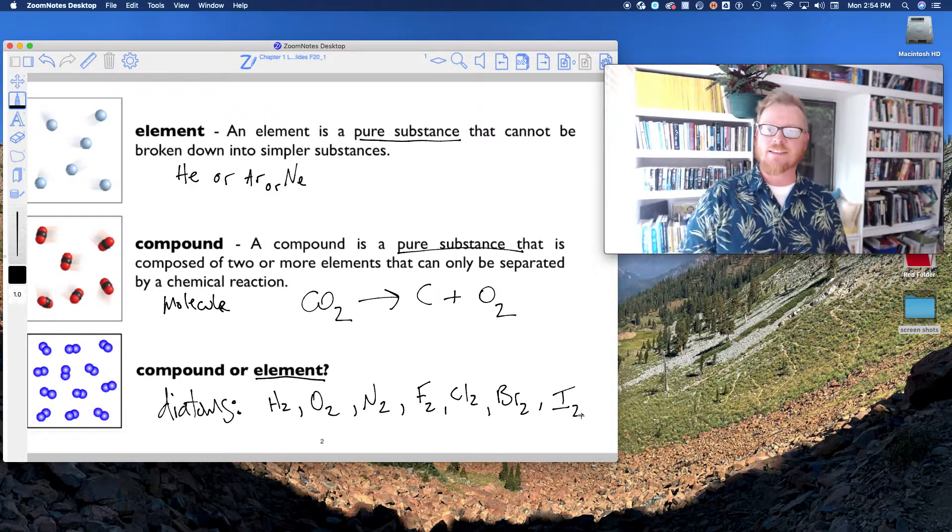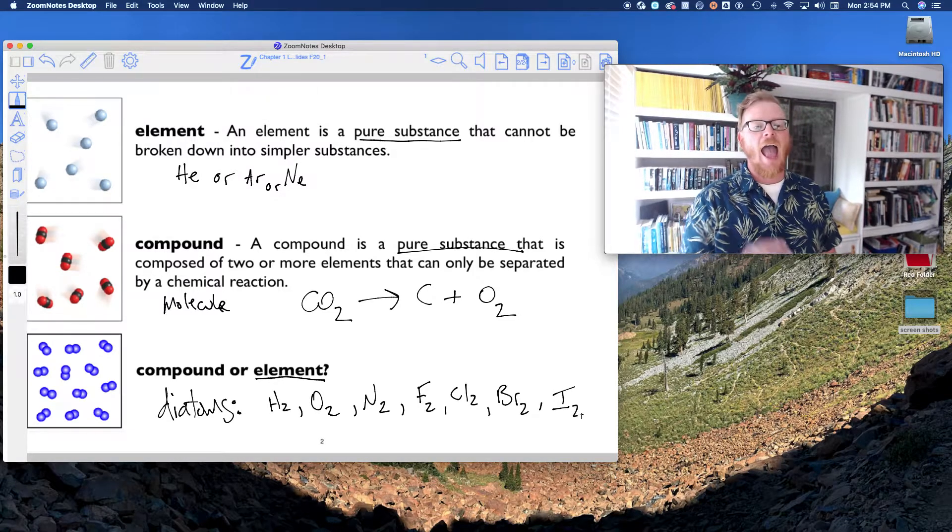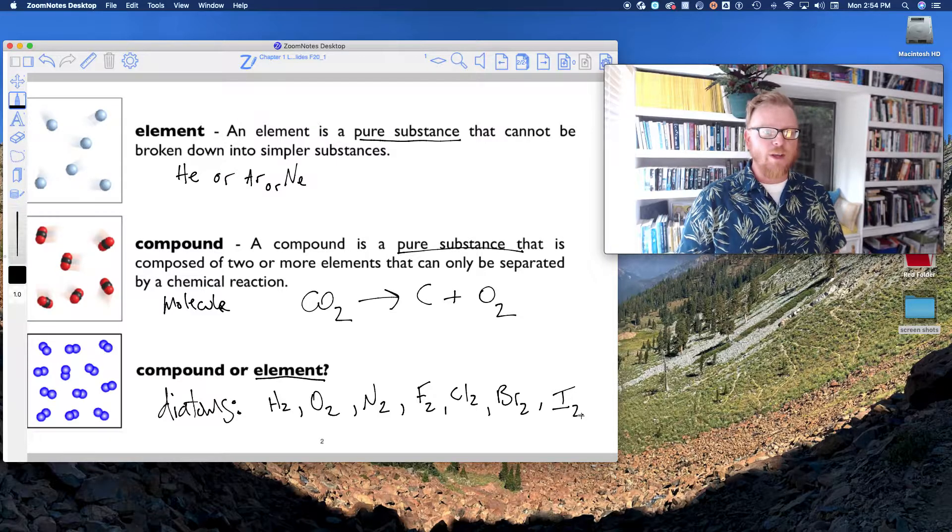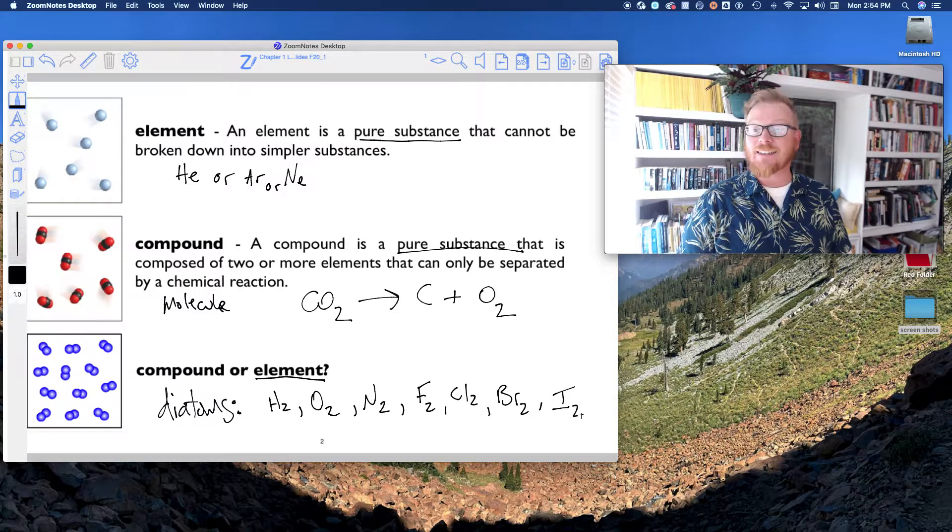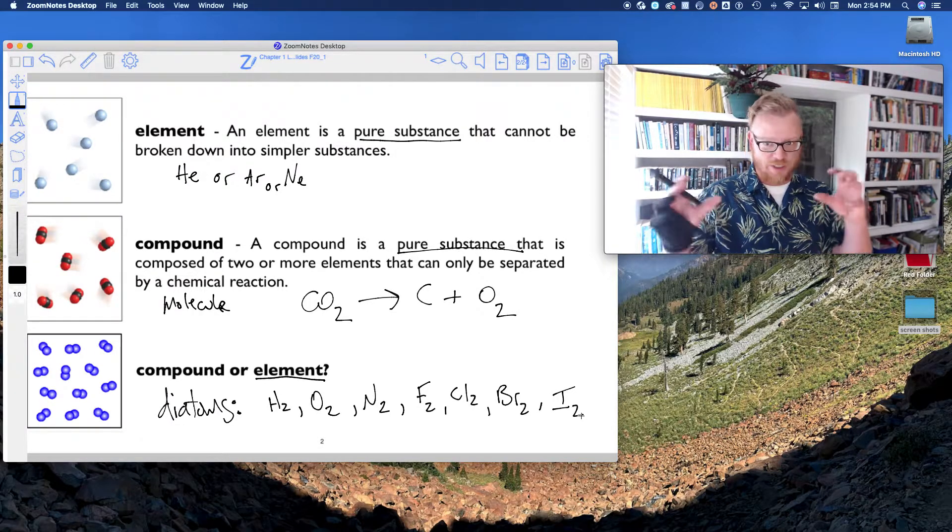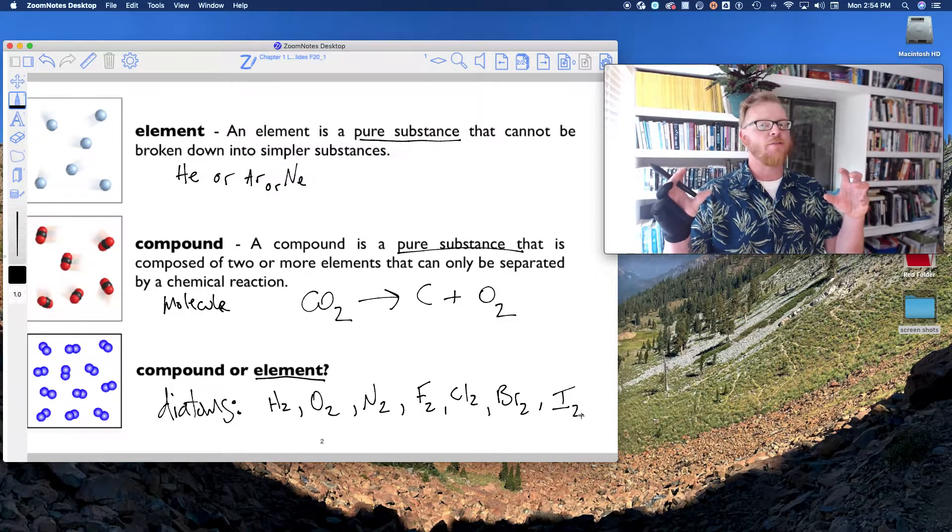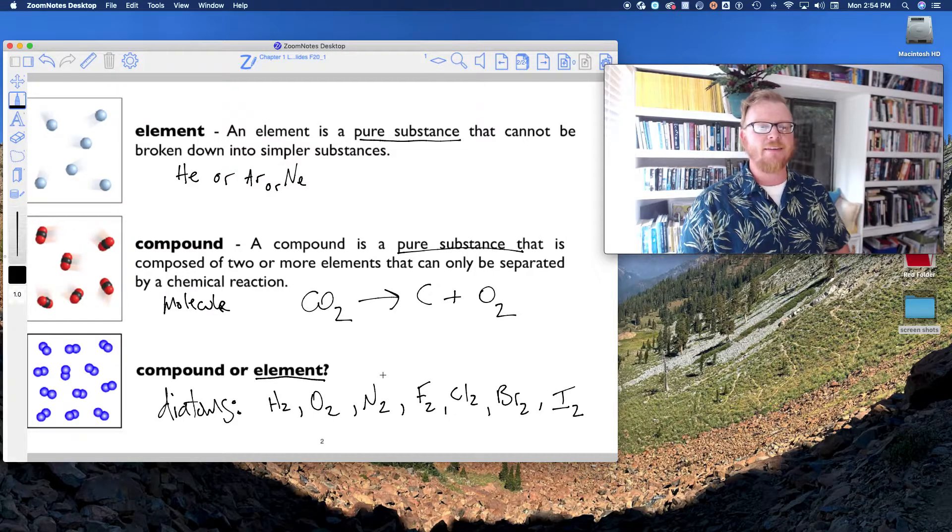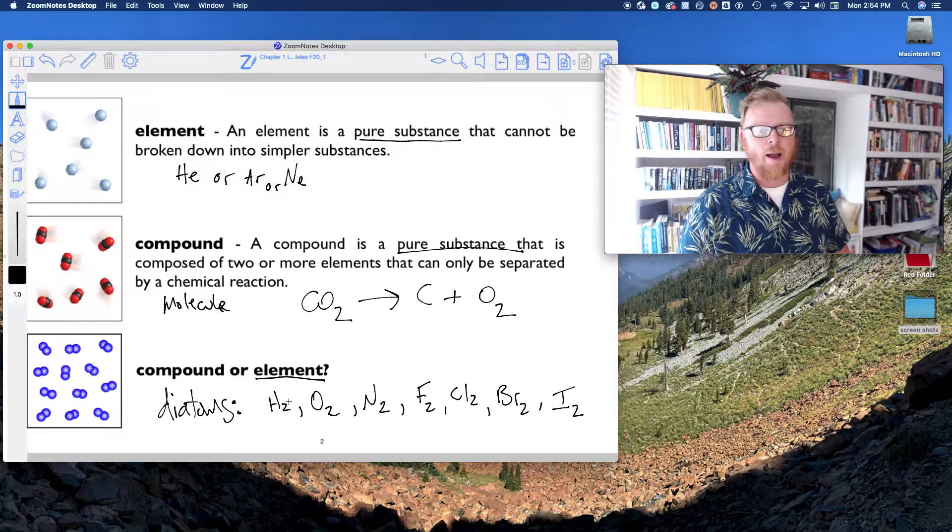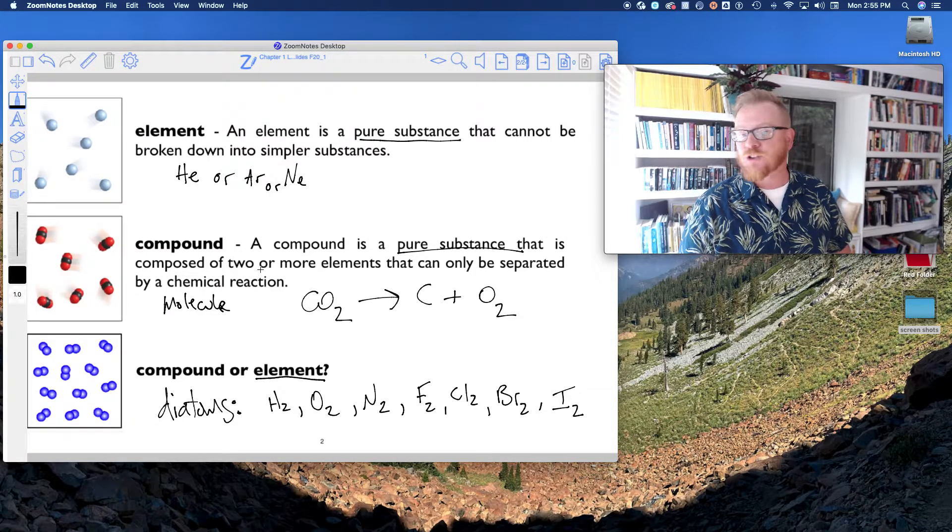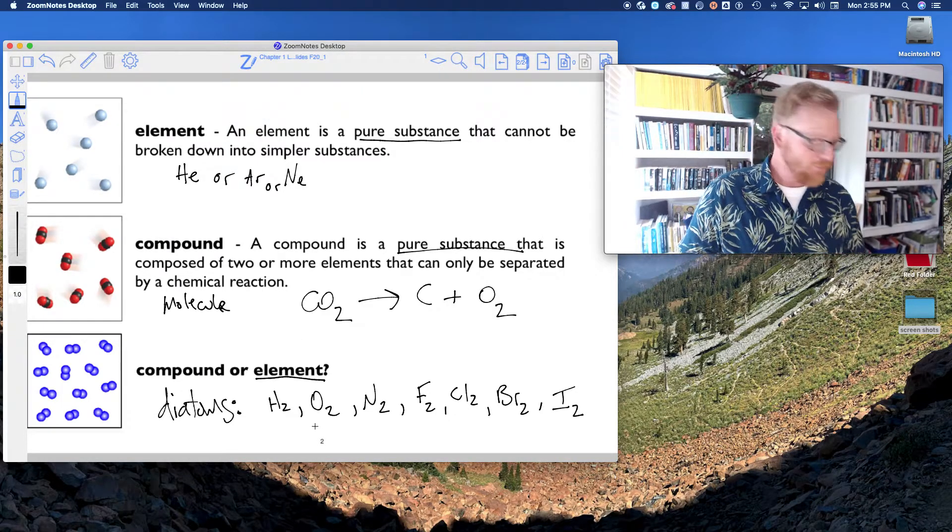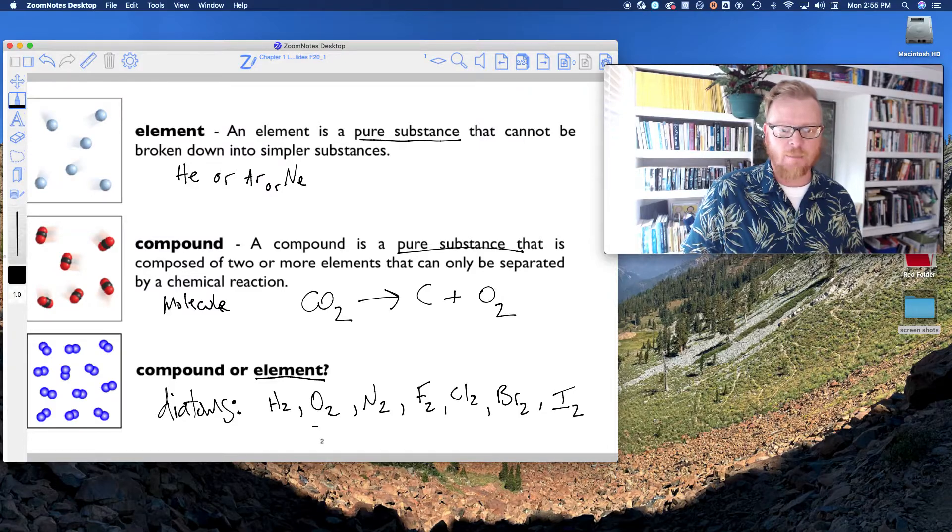So these are the examples of diatomic molecules that I want you to know. So these are elements - they exist in nature as these diatomic molecules. And we could certainly break these down into single atoms, like two single oxygen atoms, but they don't survive very long. They want to come back and bond. And so the main thing here is that all of these are not two or more, it's just the same atom in these elements, in these diatomic molecules.